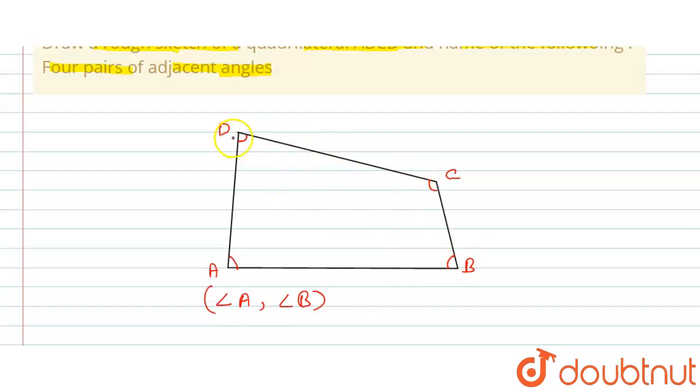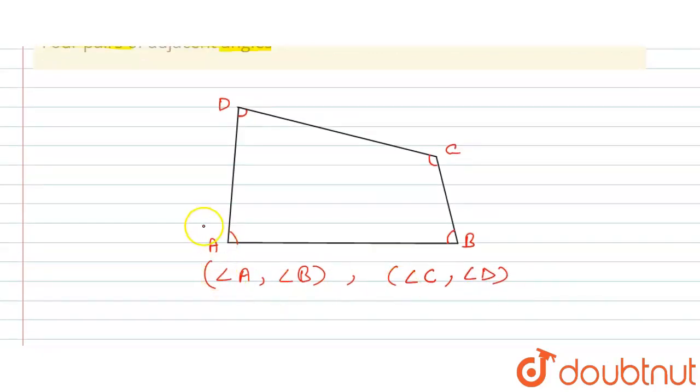The second one is, if we're taking about the arm that is CD, common arm for angles that is C and D. So angle C and angle D are adjacent angles.